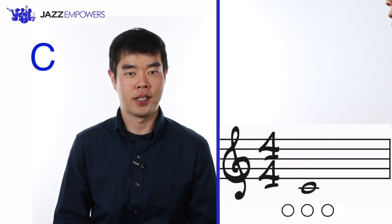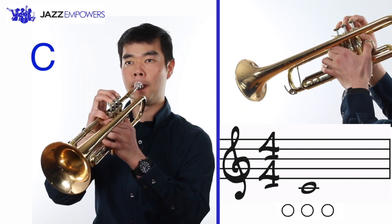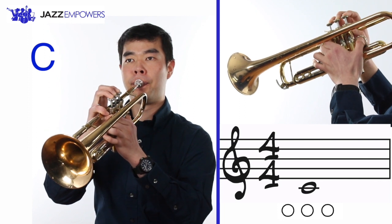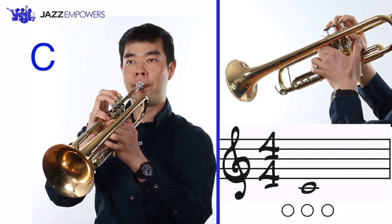The first note of the C major scale is a low C. This is located on the first line underneath the staff and is played open, meaning no valves pressed down. Here's how the low C sounds. Now try playing it with me.